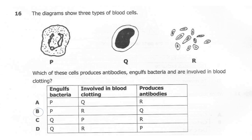The correct answer here is B. The cell which engulfs bacteria is P, which is the phagocyte — identified by having a lobed nucleus and large cytoplasm. The part involved in blood clotting is R, which are the platelets. The cell which produces antibodies is Q, which is the lymphocyte — identified by having a large nucleus and thin cytoplasm.